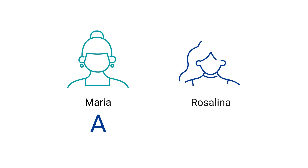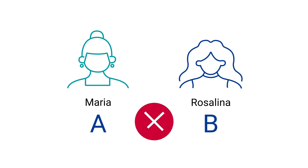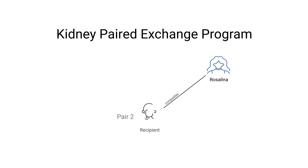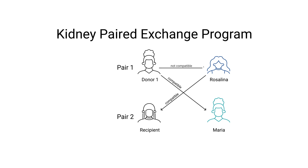Let's revisit Maria and her daughter Rosalina. It turns out that Maria's blood type is A while Rosalina's is B, which means they are not a match and are incompatible. We would not discourage Rosalina from donating because we can take advantage of the kidney paired exchange program. In this program, the donor — Rosalina — would donate her kidney to another recipient who she is compatible with, and the recipient — Maria — would receive a live donor kidney from a compatible donor as part of a swap.